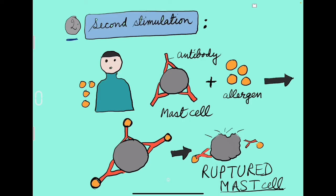The second step is the second stimulation by an allergen. Whenever the person comes in contact or gets exposed to the same allergen later on in life, after some time, the antibodies are already there, which have joined with the mast cell — the two are binding together. The allergen will now enter the body and attach with these mast cells carrying the antibodies on them, and this will lead to the rupturing, the destruction, the breaking up of the mast cell.